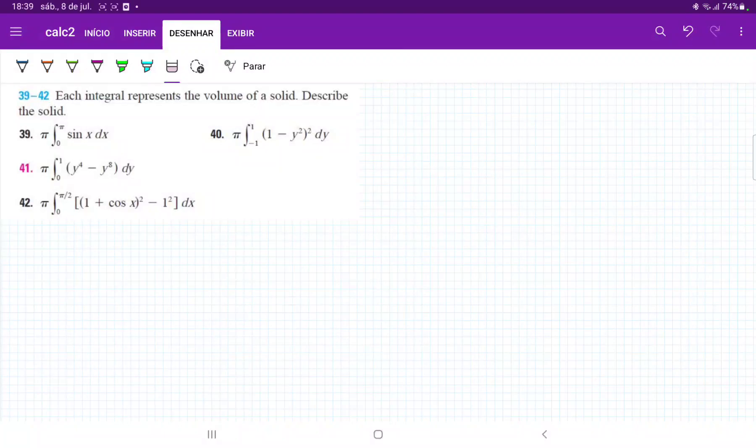So for 39, they're giving us the integral that represents the volume of a solid, and they want us to describe the solid. So for this one, we have the integral of π from zero to π times sine of x dx.